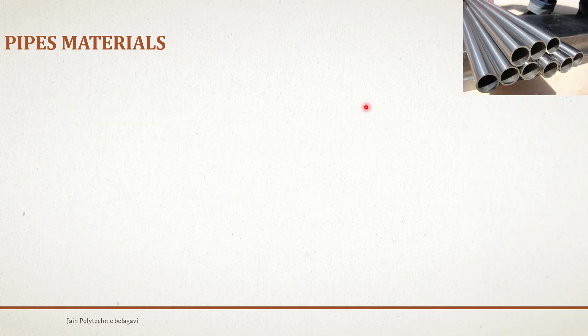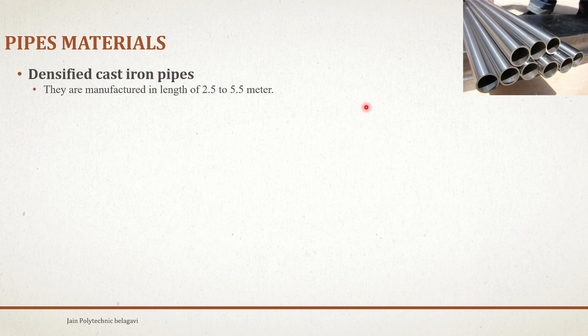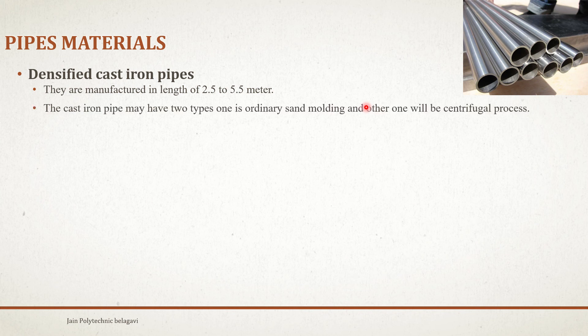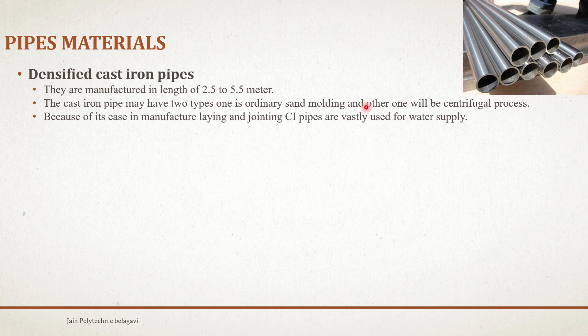Next we will understand cast iron (CI) pipes. These are manufactured in lengths of 2.5 to 5.5 meters. Cast iron pipes may be made by two types of processes: ordinary sand molding and the centrifugal process. Because of their ease in manufacturing and jointing, CI pipes are vastly used for water supply.